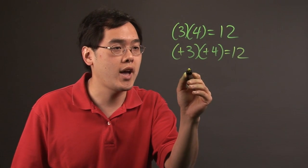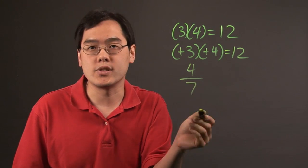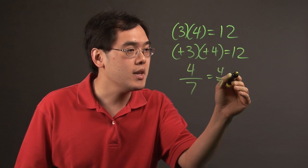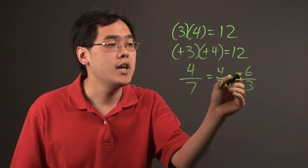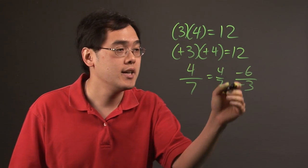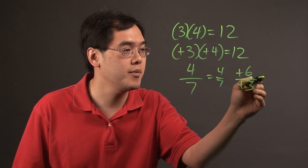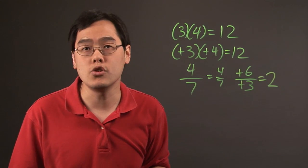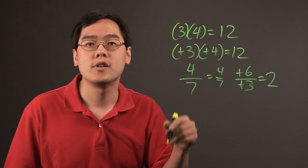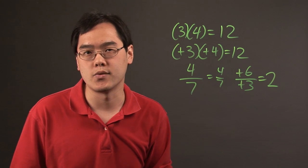Same thing with division. If you have positive 4 divided by positive 7, that's going to stay positive. If you have negative 6 divided by negative 3, because the two numbers have the same sign, it's going to be positive — negative over negative is positive, so 6 over 3 gives you 2. So positive times positive, negative times negative, positive divided by positive, negative divided by negative — they all give you positive results.